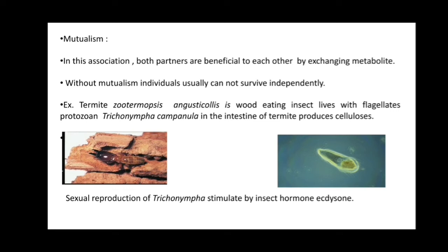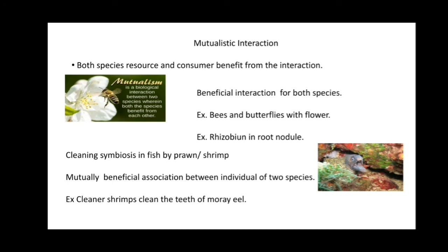The intestine of the termite contains the protozoan Trichonympha. Trichonympha secretes the enzyme cellulase, which is required for the digestion of cellulose. Cellulase is not produced in the gut of the insect itself, so with the help of Trichonympha, cellulose is digested. Since termites are wood-eating insects, this association is beneficial for both. This is a mutualistic interaction where both species benefit from the interaction.